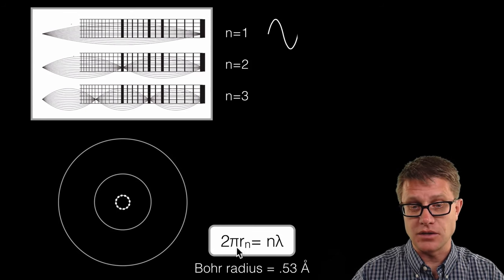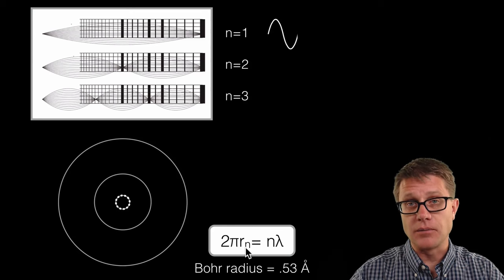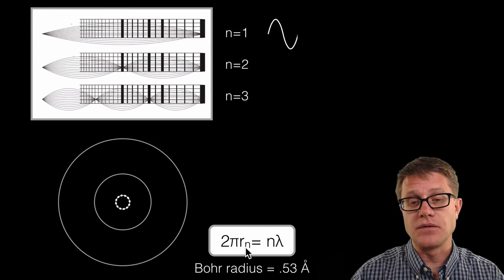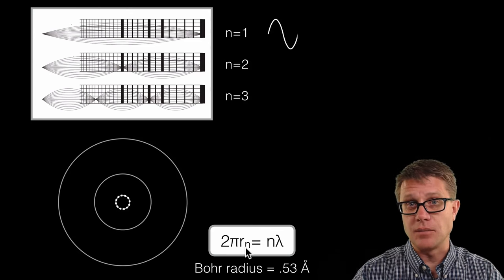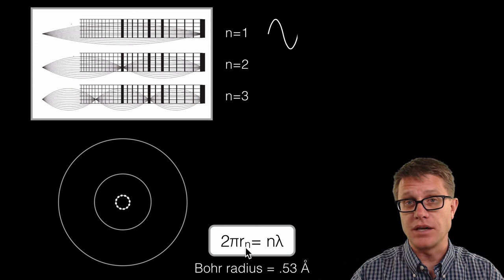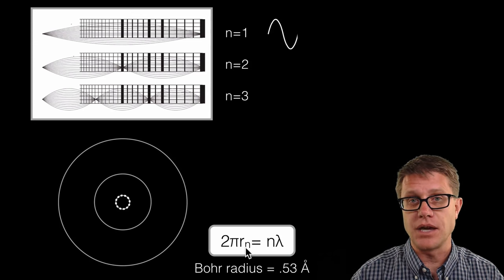And if we plug it into this equation, this here is just the circumference of that circle, we can figure out what is the size of the atom. And it ends up matching up with the Bohr radius that we had measured before, 0.53 angstroms.